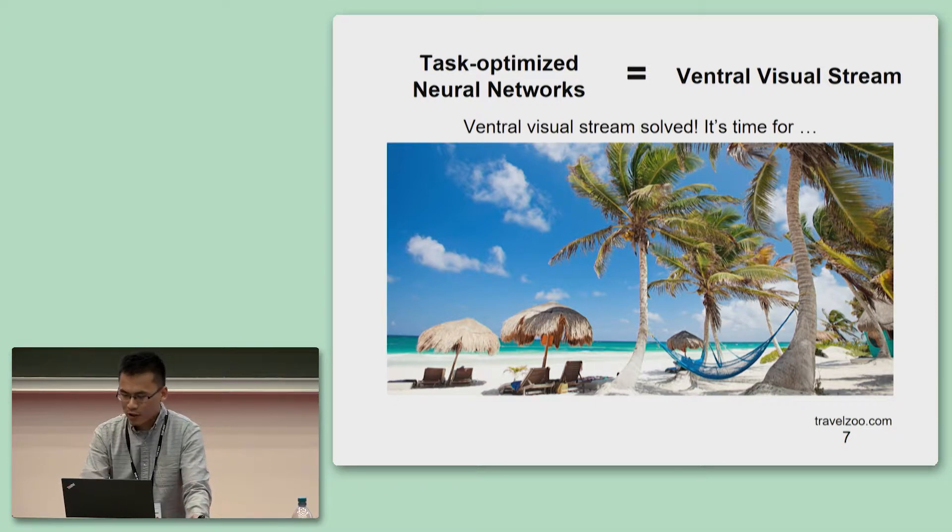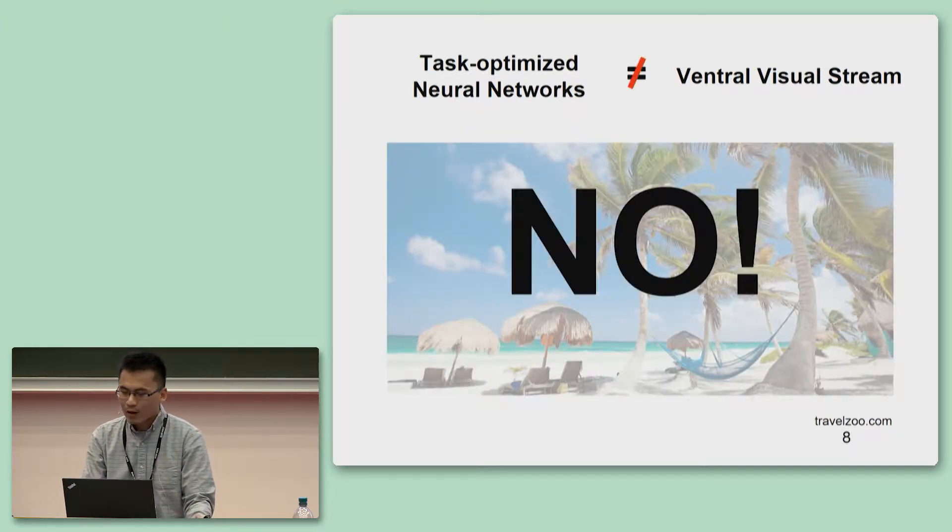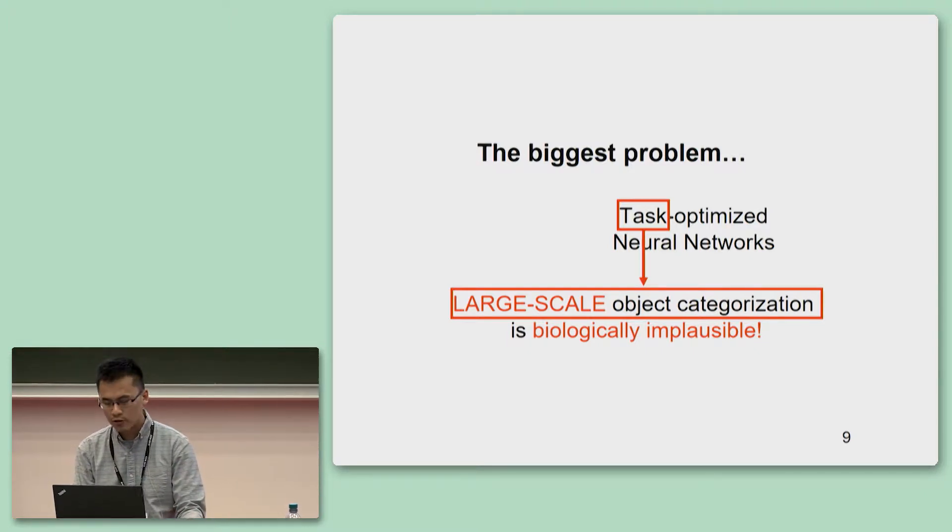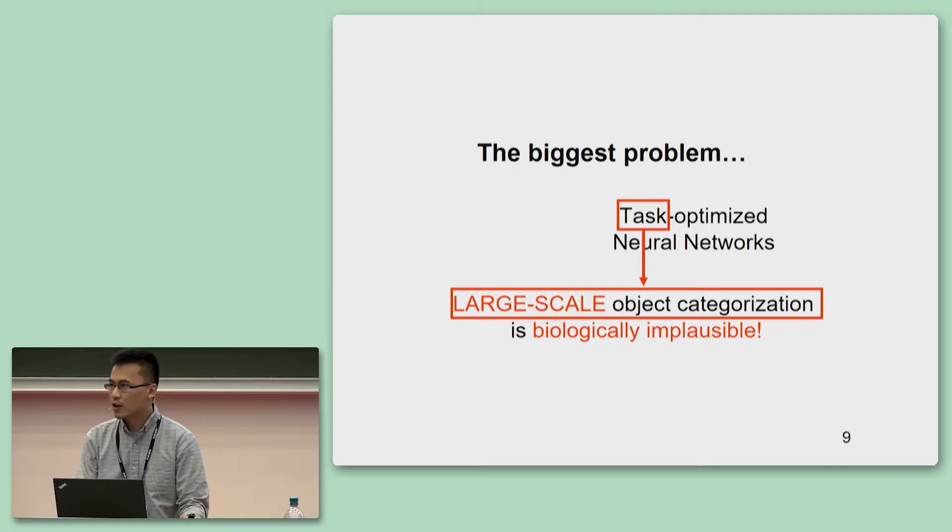So it sounds like we are at the end of this story. Should we just start our vacations with the conclusion that task-optimized networks are equal to ventral visual stream? Sadly, the answer is a huge no. The biggest problem in this model is that the task used in training these networks is large-scale object categorization task, and this task is simply biologically impossible.